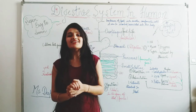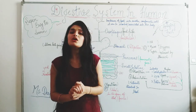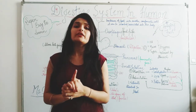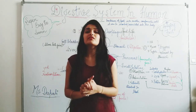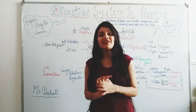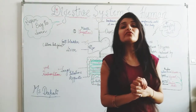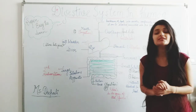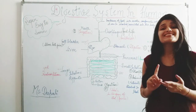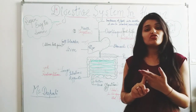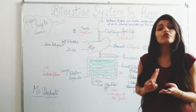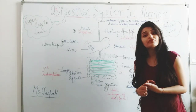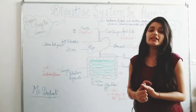Now we are going to discuss the processes of the digestive system. The digestive system includes five processes. First is ingestion. Second, digestion. Third, absorption. Fourth, assimilation. And fifth, egestion.